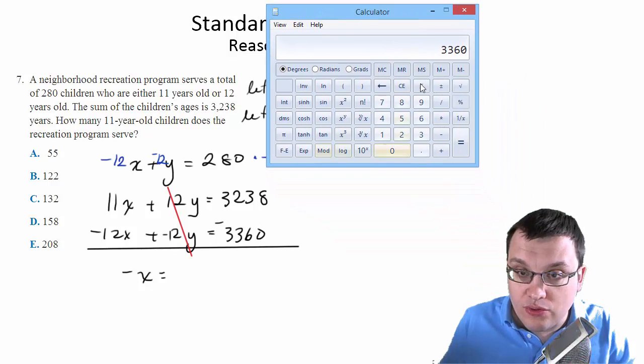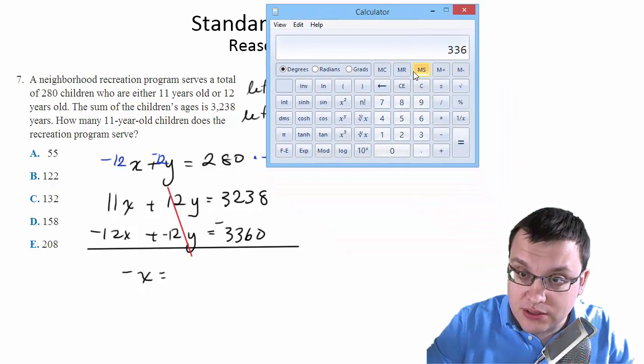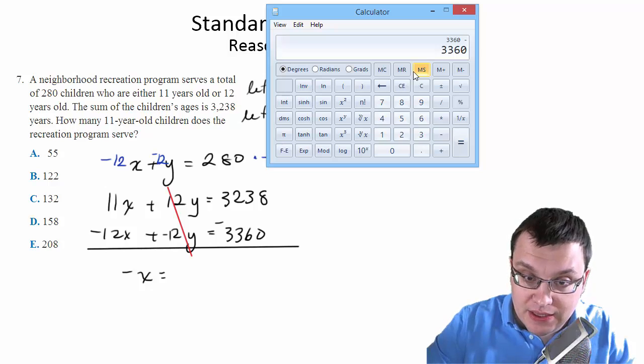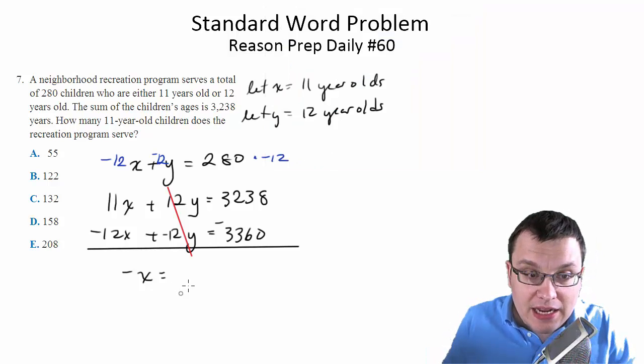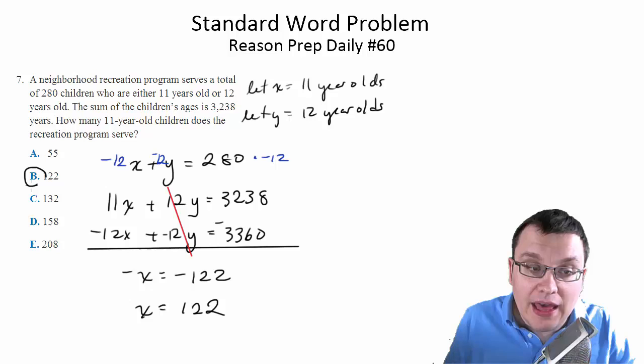Let's see. 3,060 minus 3,238. So we get negative 122 or x is equal to 122. And that should be choice B.